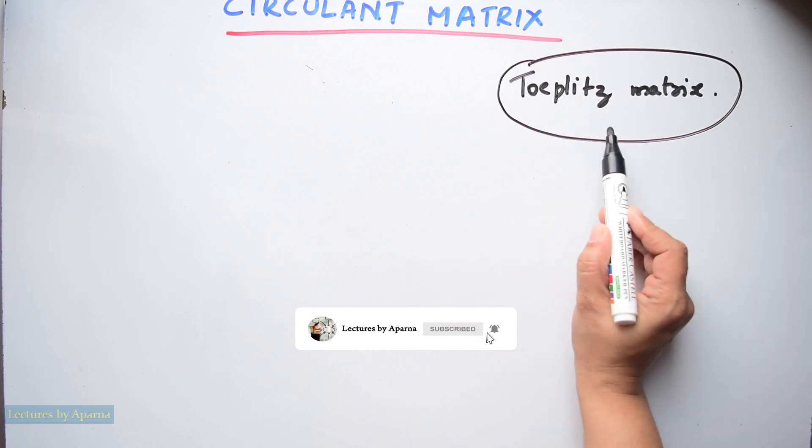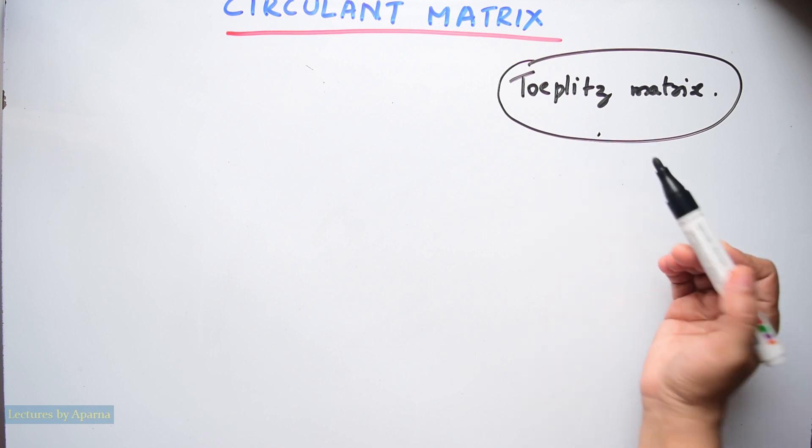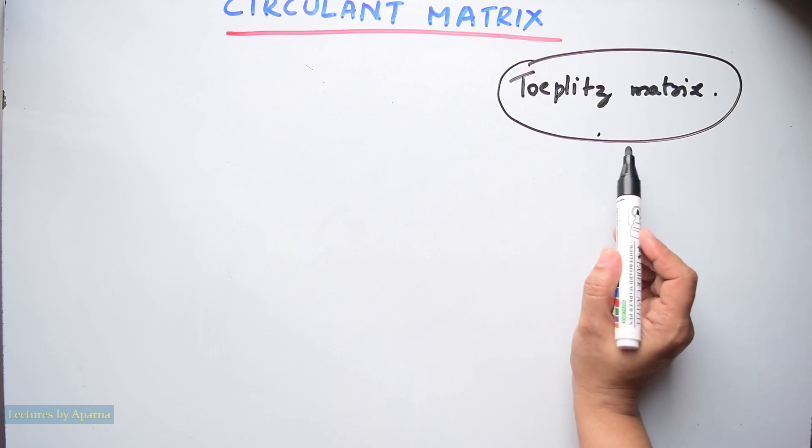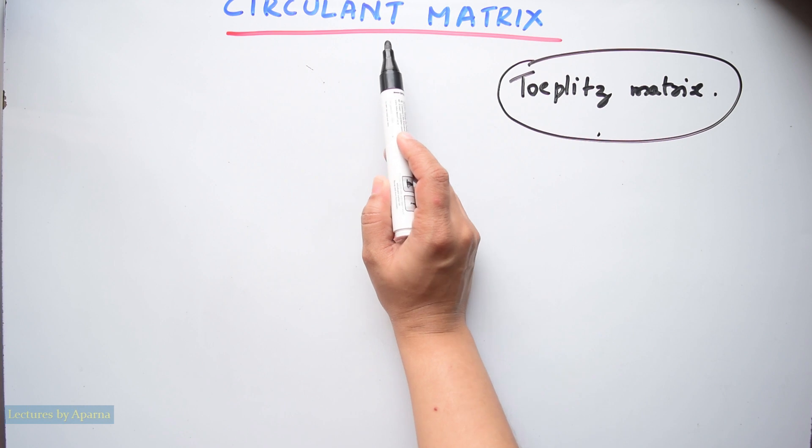Circulant matrix is a particular type of Toeplitz matrix. If you want to know what a Toeplitz matrix is, I have made a video on it. I will give its link in the description box just below this video. So let us discuss a circulant matrix today.